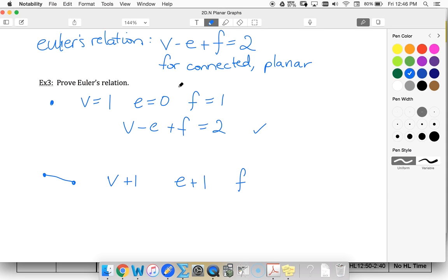Plugging into Euler's relation: V plus 1 minus E plus 1 plus F still equals 2. So we know that our relationship still holds true.